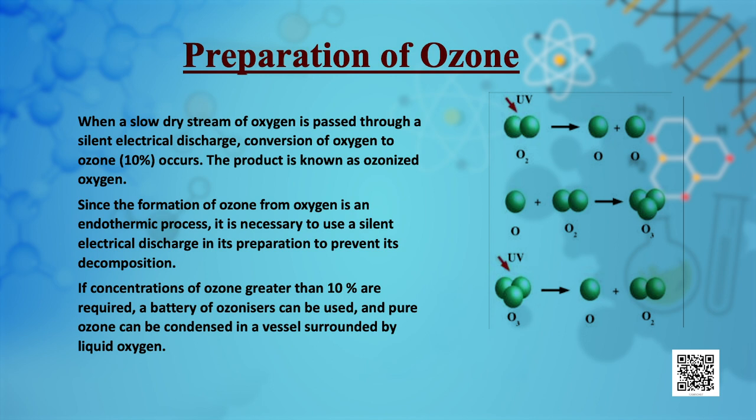Since the formation of ozone from oxygen is an endothermic process, it is necessary to use a silent electric discharge in its preparation to prevent decomposition. If concentrations of ozone greater than 10% are required, a battery of ozonizers can be used and pure ozone can be condensed in a vessel surrounded by liquid oxygen.